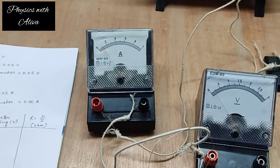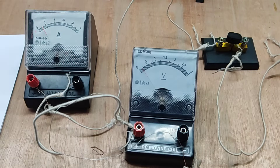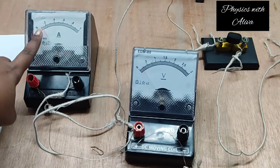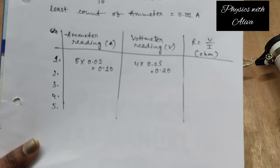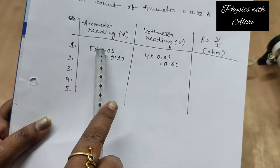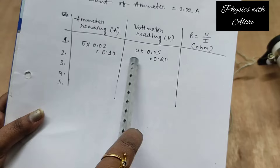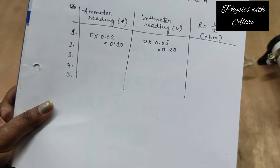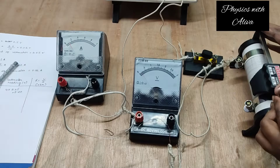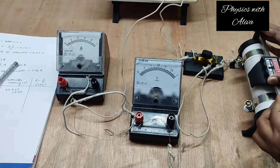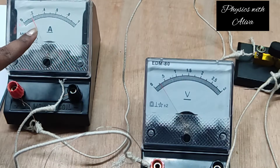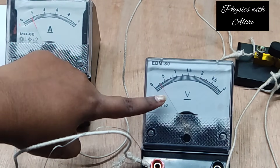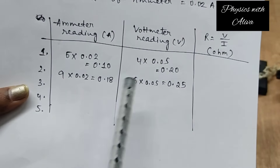Here we can see the ammeter reading and voltmeter reading both. In the ammeter reading, five small divisions are crossed by the pointer, and four small divisions are crossed in the voltmeter. So the current reading will be 5 divisions multiplied by the least count, and the voltage reading will be 4 divisions multiplied by the least count. This way we have to take four more readings. Now I am changing the position of the rheostat and taking another reading. In ammeter reading we can see nine divisions and in voltmeter reading five divisions.